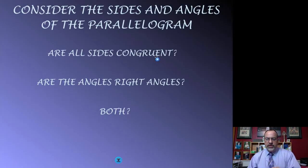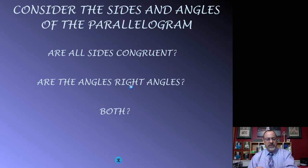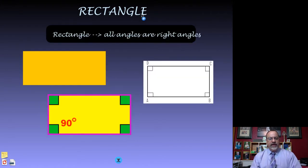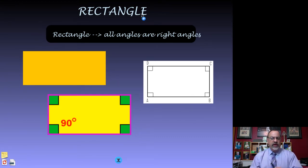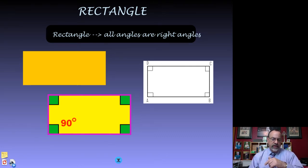Going back, if the answer to that question was no, then we leave it as simply a parallelogram. Then we go to the next question and look at the angles: are all the angles right angles? If the answer is yes, then we have a rectangle. A rectangle is a parallelogram — it has two pairs of opposite sides that are parallel — but in addition to that, all the angles are right angles, measuring 90 degrees.